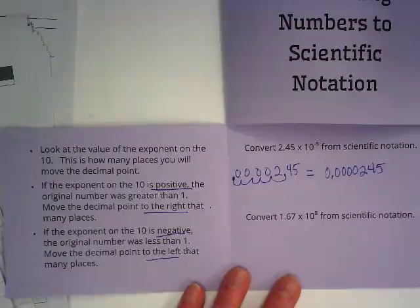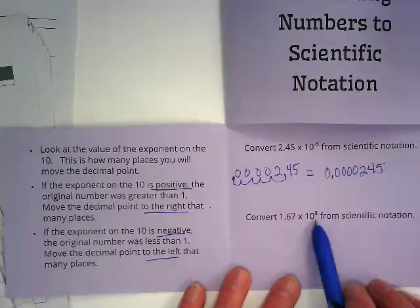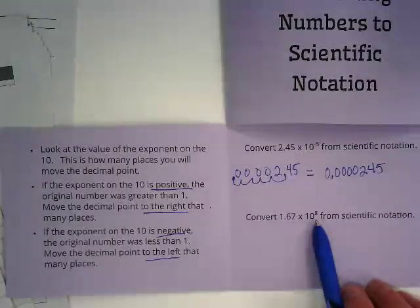The next one, we're converting 1.67 times 10 to the 8th from scientific notation. It's a positive exponent, so we're going to move to the right.